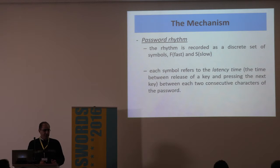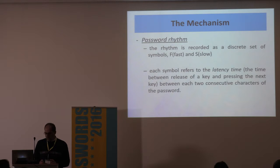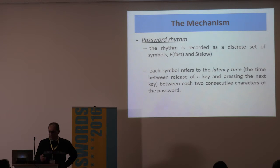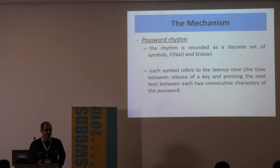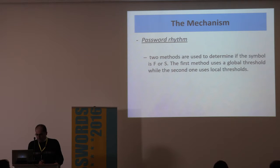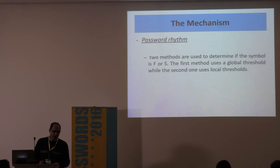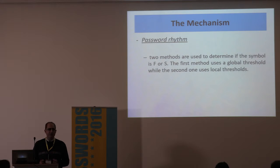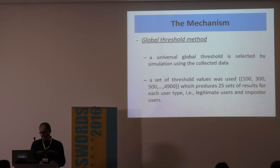The rhythm is recorded as discrete symbols F (fast) and S (slow). We record the latency time between keystrokes and apply a global threshold to decide which discrete symbol to assign. We searched for a global threshold across all users, classifying each latency time accordingly. The set of threshold values ranged from 100 milliseconds up to 4,900 milliseconds, covering the entire span of recorded latency times for all users.